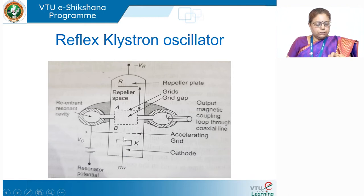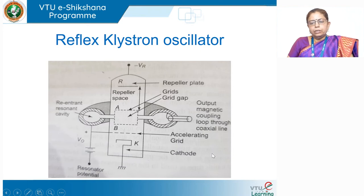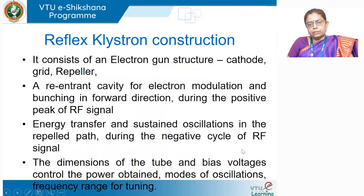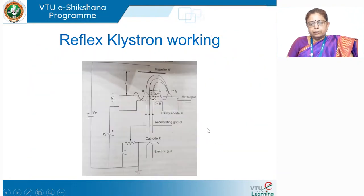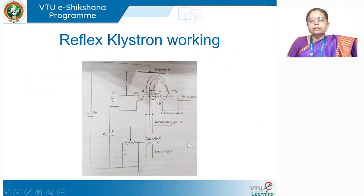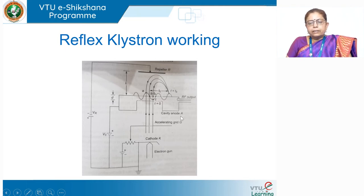The electron beam comes into the repeller space, the repeller reflects it back into the grid space again, and then the grid absorbs the electrons back and sends them to the cathode. To summarize the construction: the reflex klystron oscillator has an electron gun structure and a re-entrant cavity, both housed in an evacuated glass chamber, with all electrodes biased with positive or negative potential depending on their functionality.